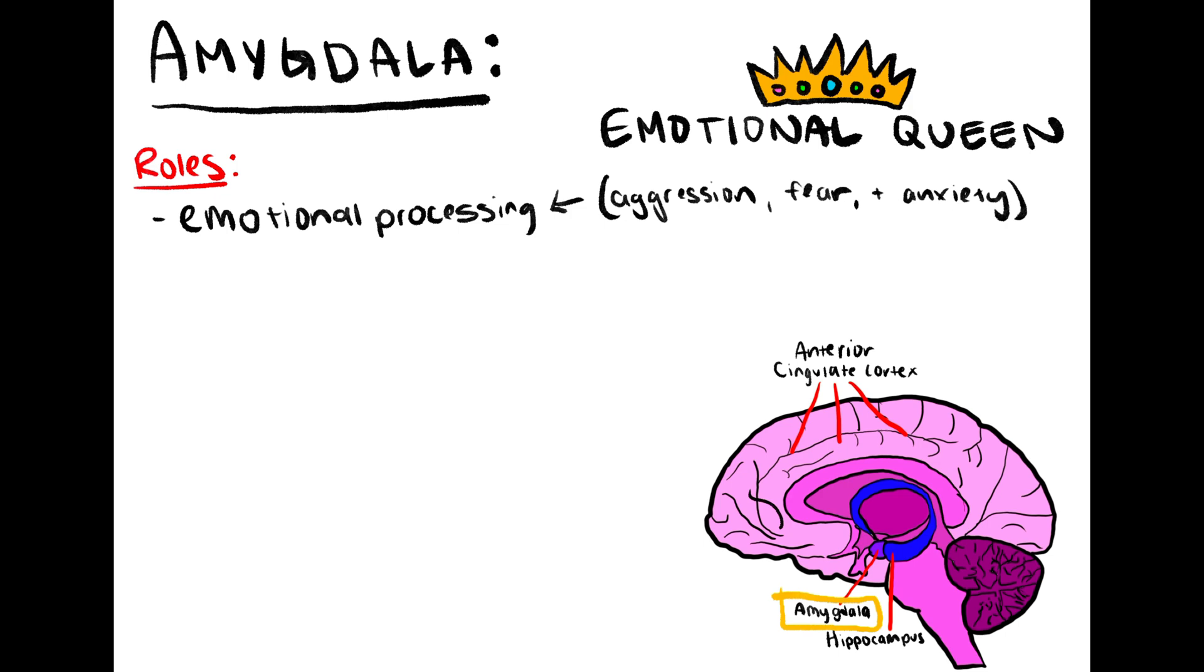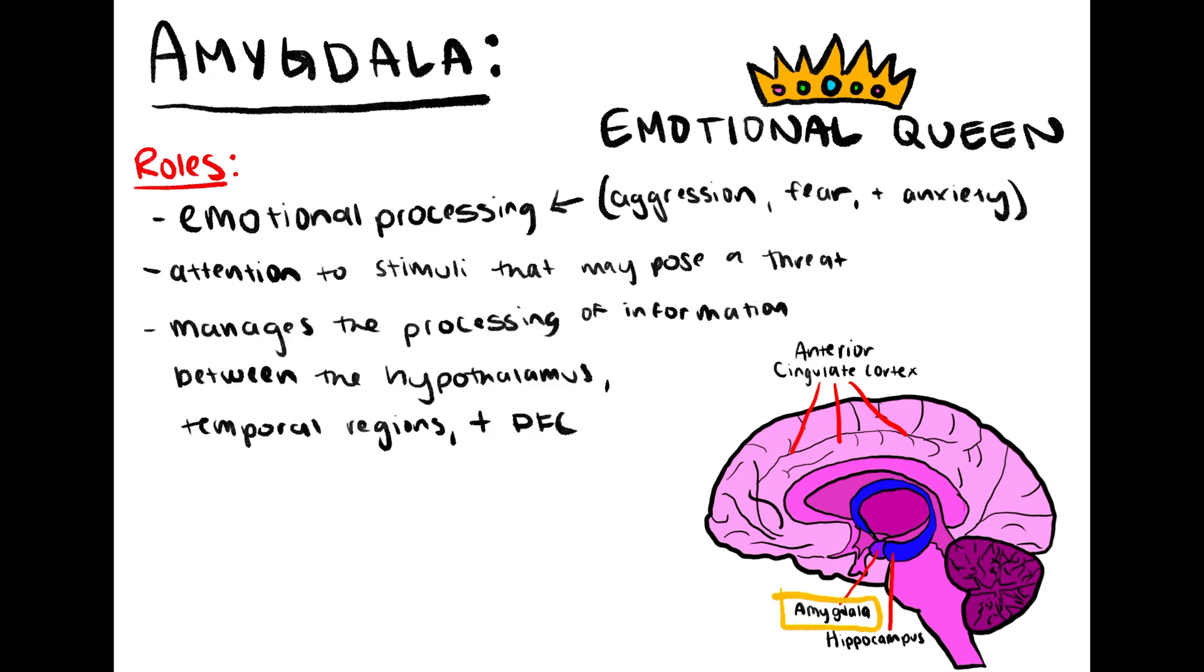The amygdala also plays a role in attention to external salient stimuli that may pose a threat or danger to the individual and additionally manages the processing of information between the hypothalamus, temporal regions, and the prefrontal cortex.